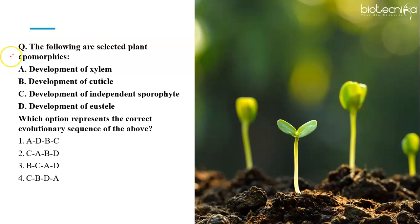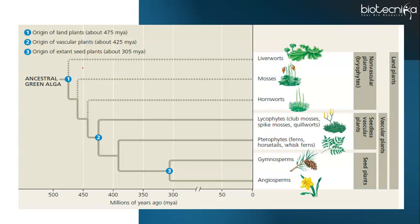Another type of question which can be asked on this topic is statement based question. As shown here, no figure is given. Apomorphies are given and you have to choose the option which represents the correct evolutionary sequence of the given apomorphies which are development of xylem, development of cuticle, development of independent sporophyte and development of eustele. I am sure CSIR NET aspirants having botany background can easily answer this question because all you need to recall is the plant classification. As we all know, plant kingdom includes without doubt the green algae, liverworts, mosses, pteridophytes, gymnosperms and finally the angiosperms, the largest group of plants.